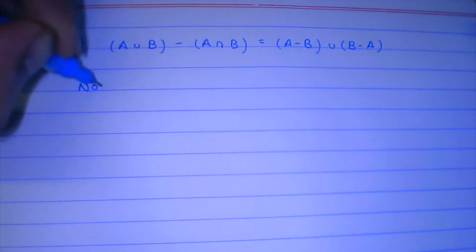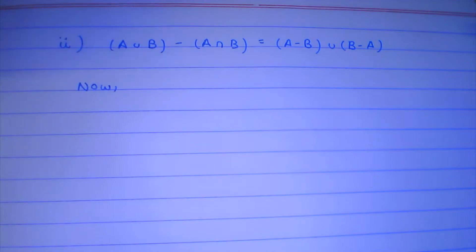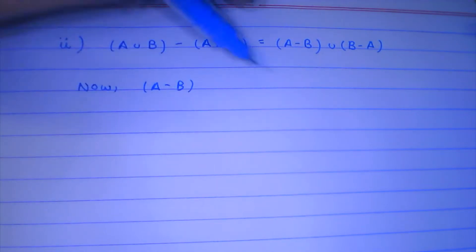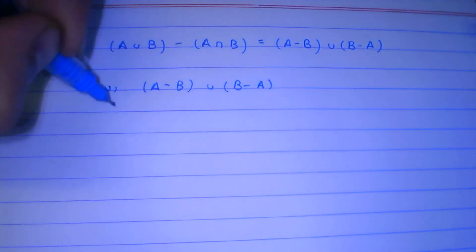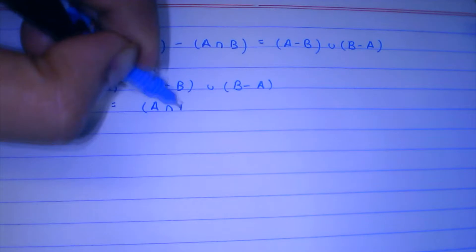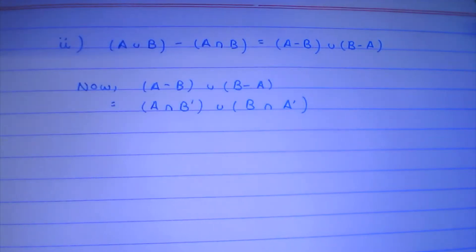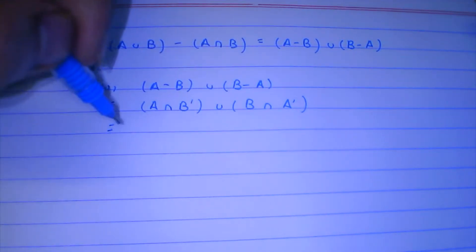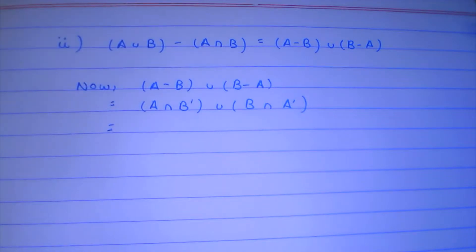Taking the RHS: (A minus B) union (B minus A), which equals (A intersection B complement) union (B intersection A complement). Now we are going to distribute them.